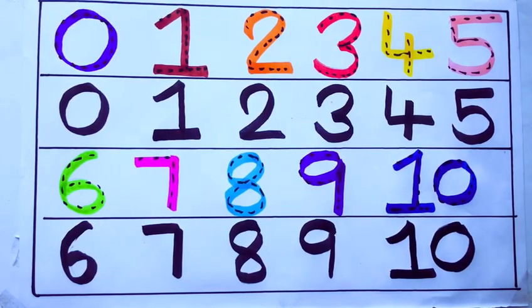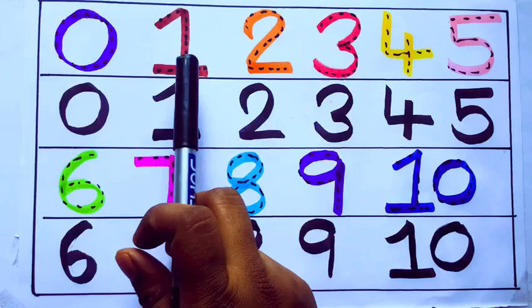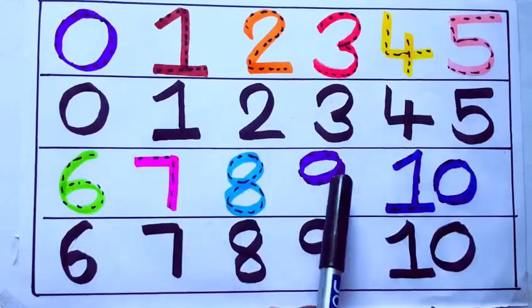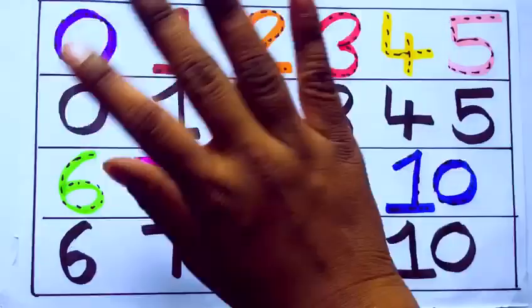Let's learn numbers: zero, one, two, three, four, five, six, seven, eight, nine, ten. Okay, bye kids.